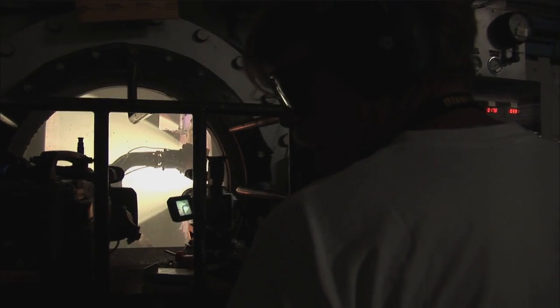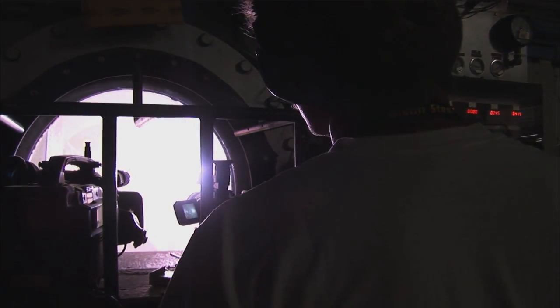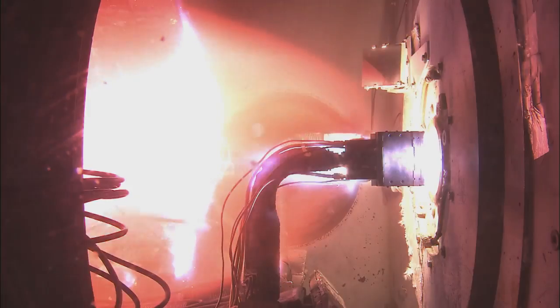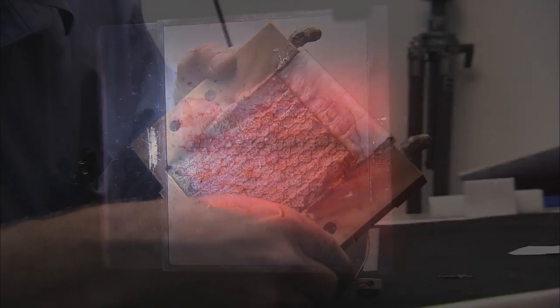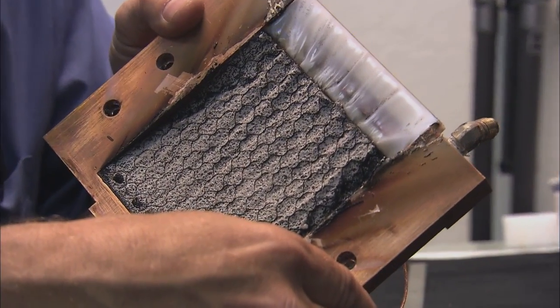PICA-X samples were tested at NASA Ames using special facilities to simulate planetary reentry temperatures and high-speed atmospheric flows. During these tests, the surface temperature of the heat shield material reached approximately 3,450 degrees Fahrenheit, almost twice as hot as molten lava.